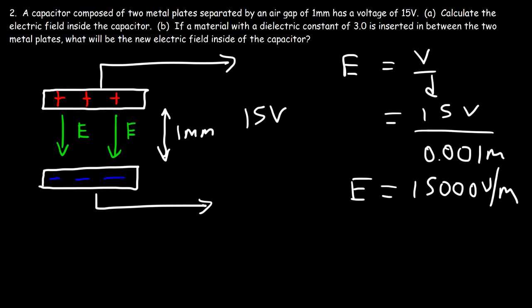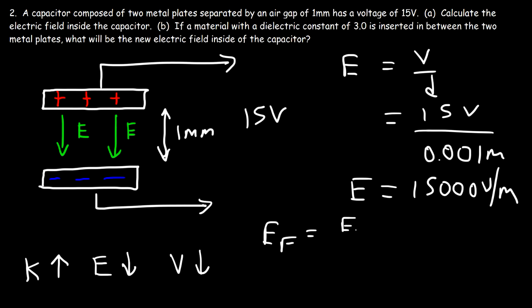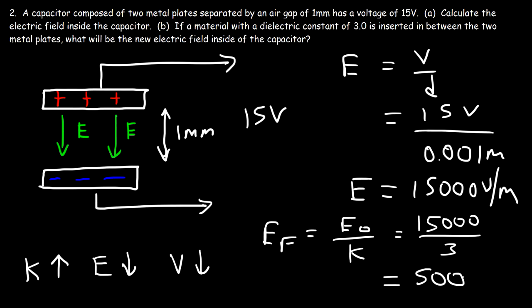If a material with a dielectric constant of 3.0 is inserted between the two metal plates, what will be the new electric field inside the capacitor? If we increase the dielectric constant, the voltage will decrease since it's not connected to a battery, and the electric field is proportional to the voltage, so the electric field should decrease as well. The new electric field equals the original divided by K: 15,000 divided by 3 is 5,000 volts per meter.